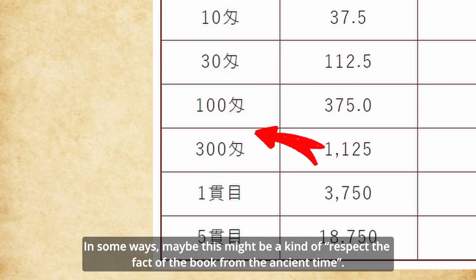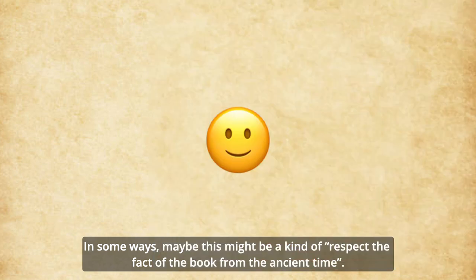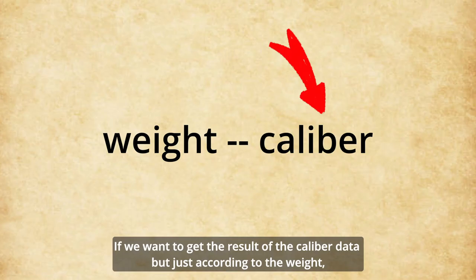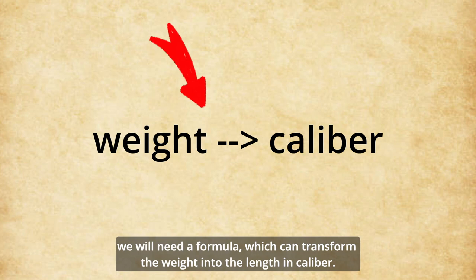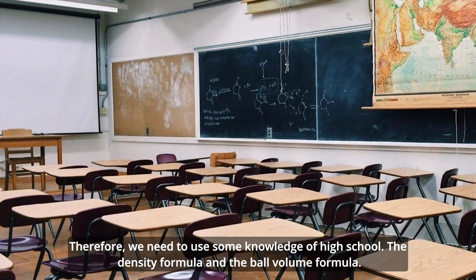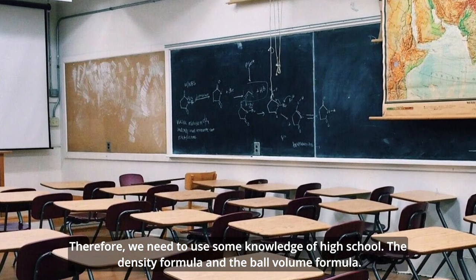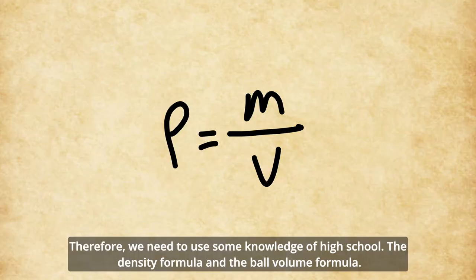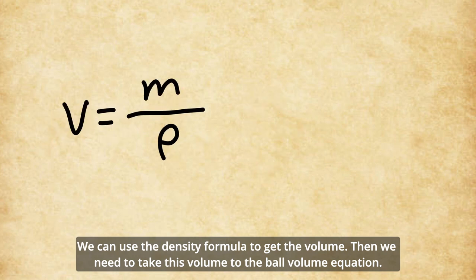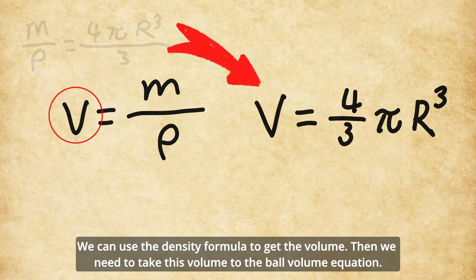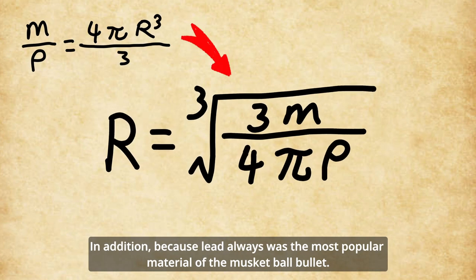In some ways, this might be a kind of respect for the books from ancient times. If we want to get the result of the caliber data but only have the weight, we will need a formula which can transform the weight into a length in caliber. Therefore, we need to use some high school knowledge: the density formula and the sphere volume formula. We can use the density formula to get the volume, then take this volume into the sphere volume equation, and finally we get the formula that we want.